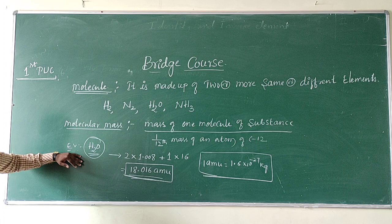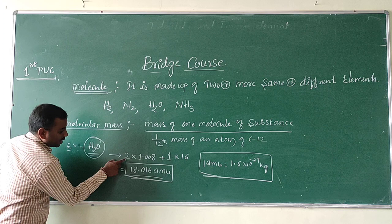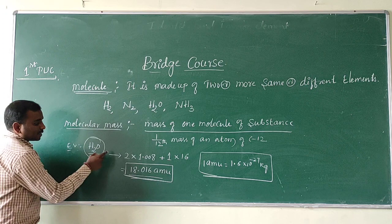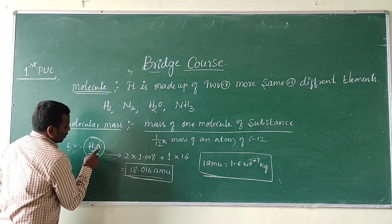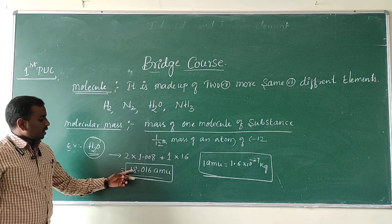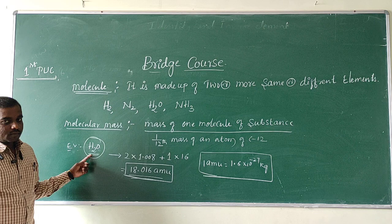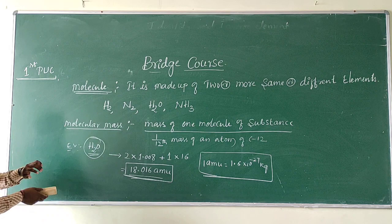See, how to calculate the molecular mass of water. In water, there are 2 hydrogen atoms — so 2 into 1.008 — plus 1 oxygen atom, 1 into its atomic mass, which is 16. Totally, it is 18.016 AMU — atomic mass unit. This is the molecular mass of water.